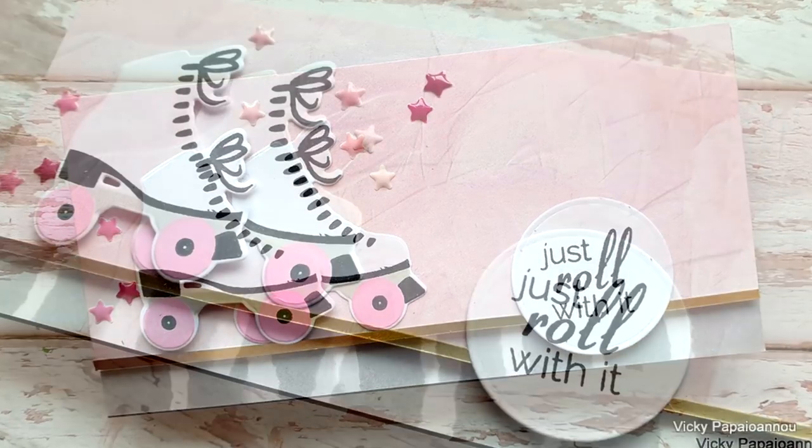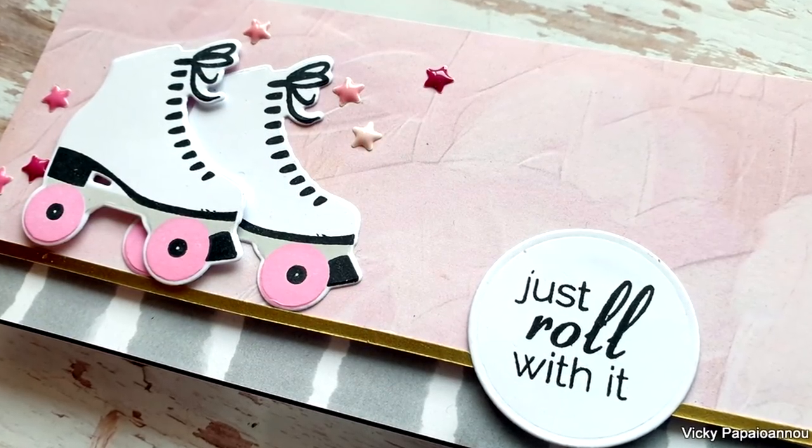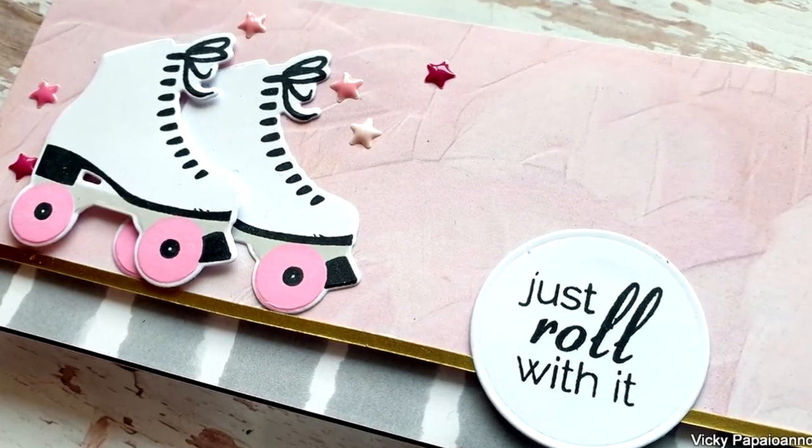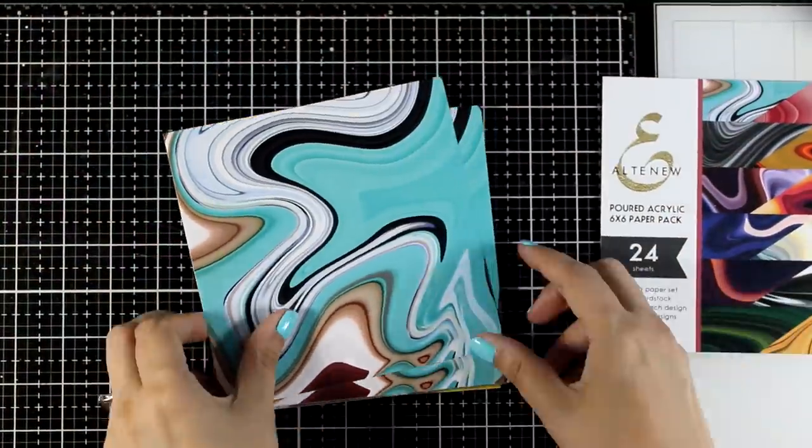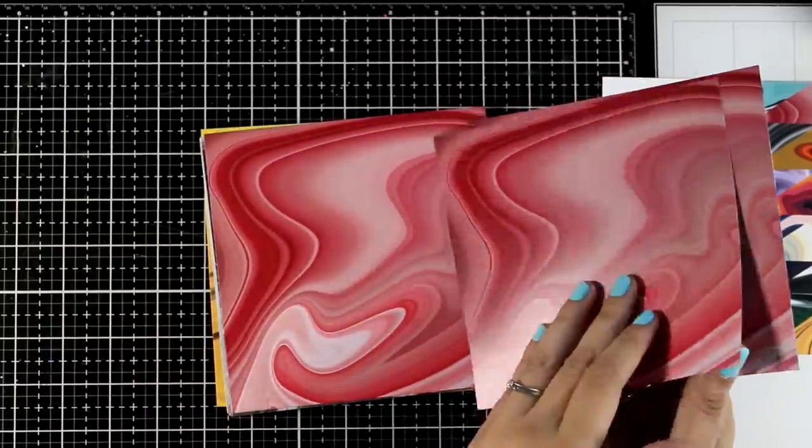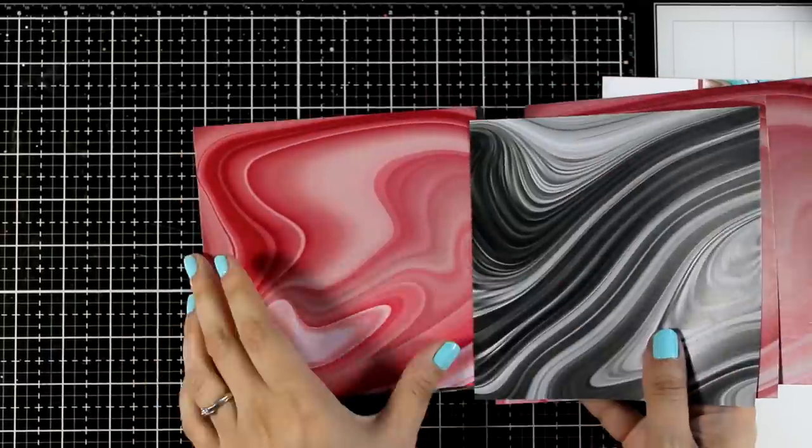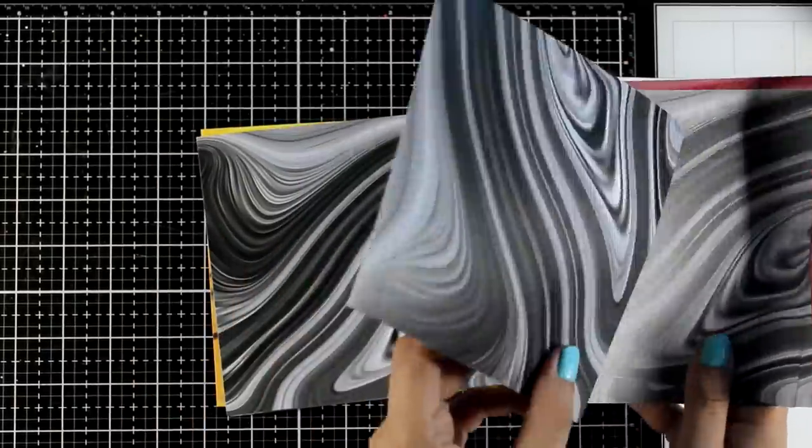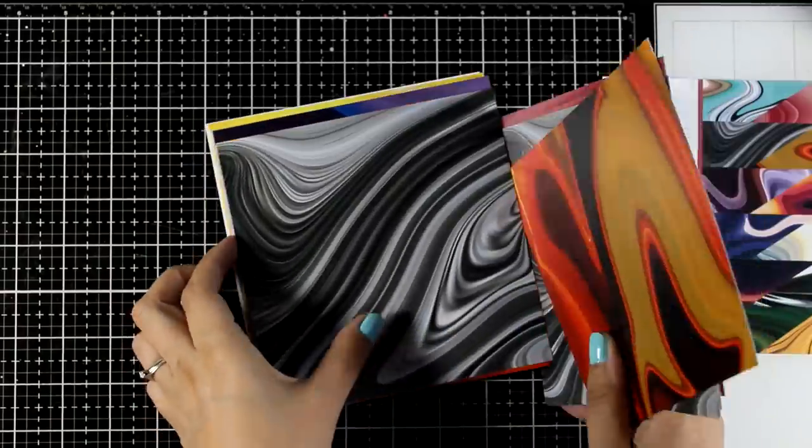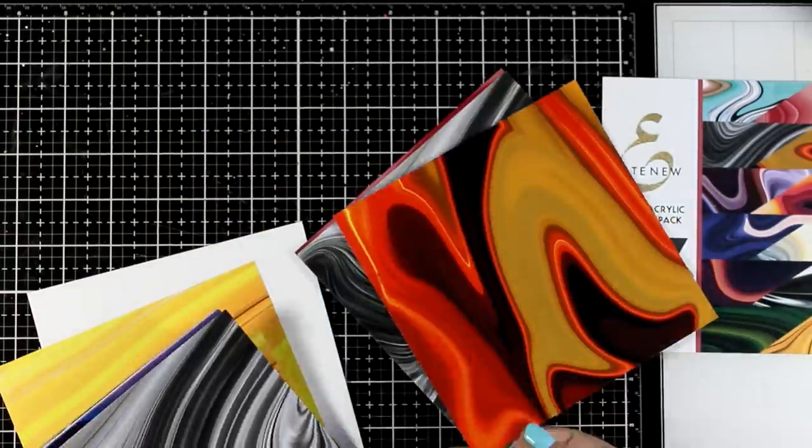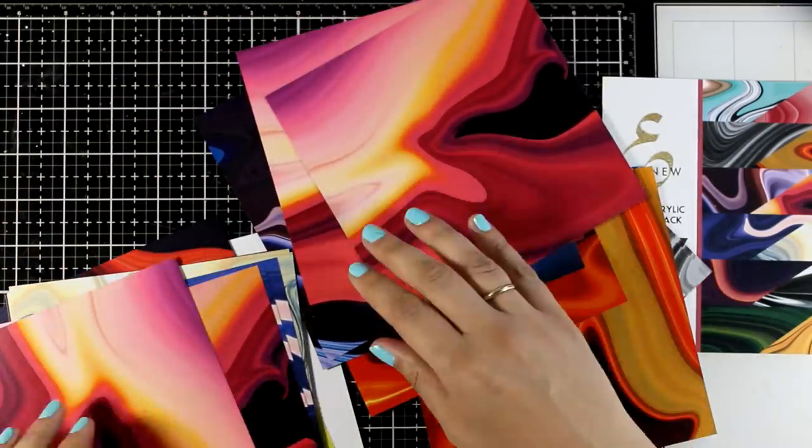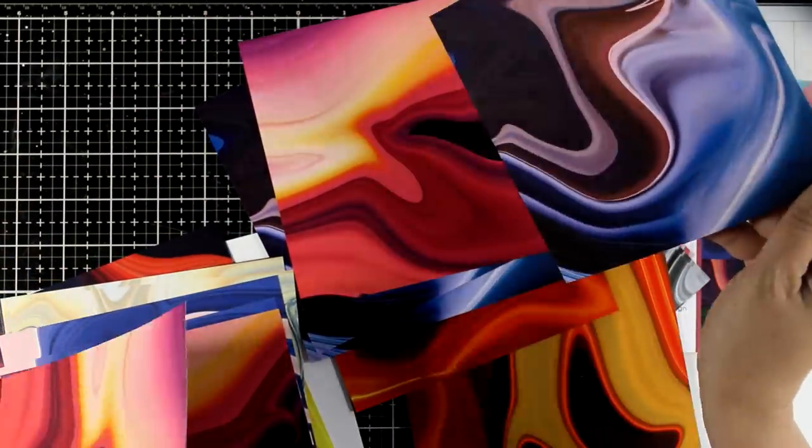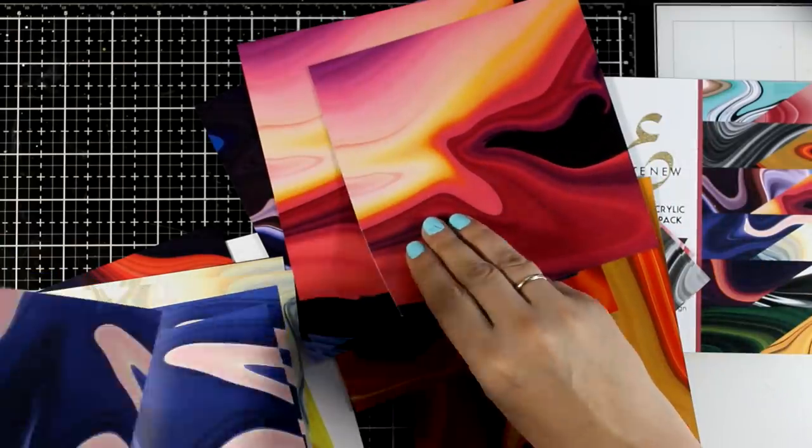In both of those cards the background was quite subtle or monochromatic so it was easy to use a focal point at the front. But that technique doesn't work with very busy backgrounds because they are not going to help your focal point pop when you stick it on top of it. So I went through my stash and found this paper pad. This is again a 6x6 by Altenew from an older collection and these papers are super busy. So I am going to show you three examples on how you can use those.